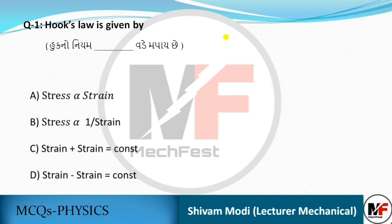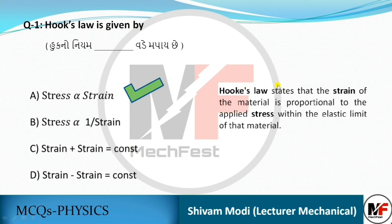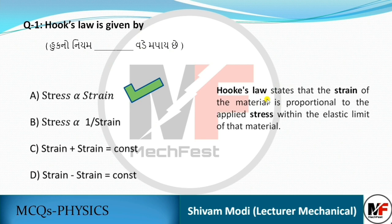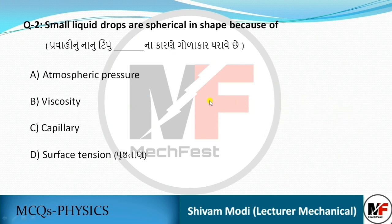First question: Hooke's law is given by which formula? The answer is stress and strain. Hooke's law states that the strain of the material is proportional to the applied stress within the elastic limit of the material. That is called Hooke's law.